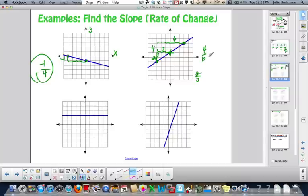Can you reduce four sixths? Yeah. Two goes into four twice. Two goes into six three times. So two thirds is our slope.